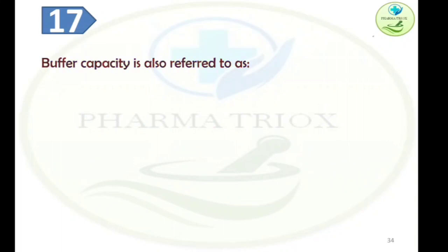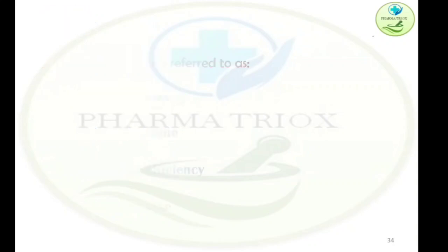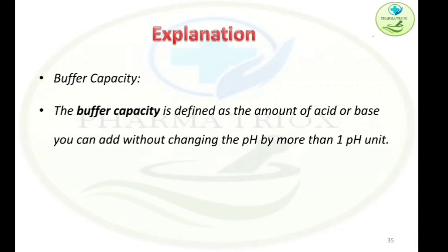Question seventeen: Buffer capacity is also referred to as — Option A: buffer index, Option B: buffer value, Option C: buffer efficiency, Option D: all of the above. The answer is Option A — buffer index. Buffer capacity is defined as the amount of acid or base that can be added without changing the pH by more than 1 pH unit.